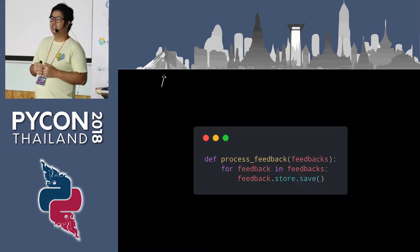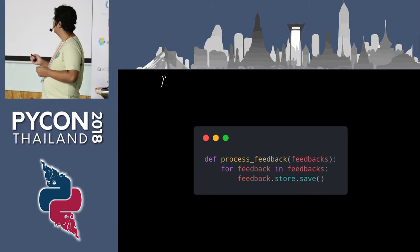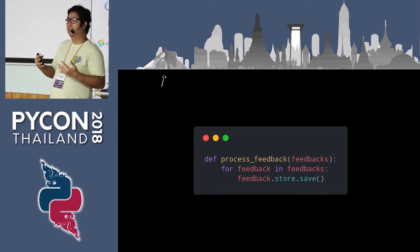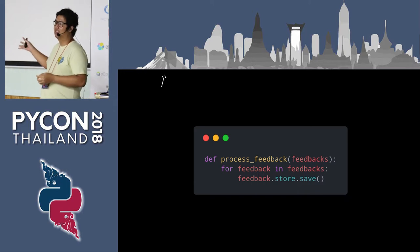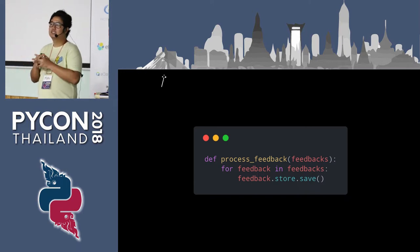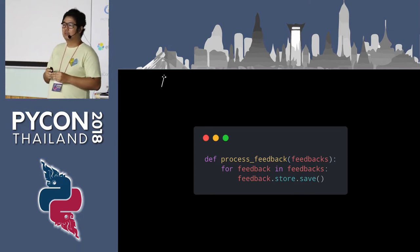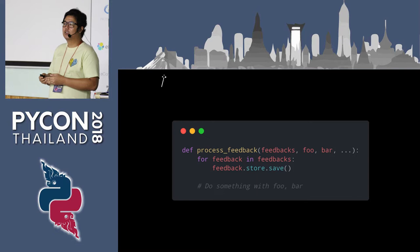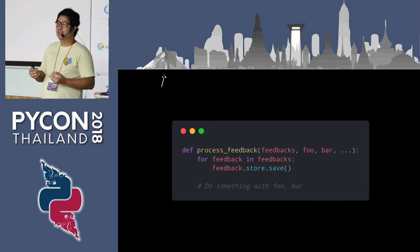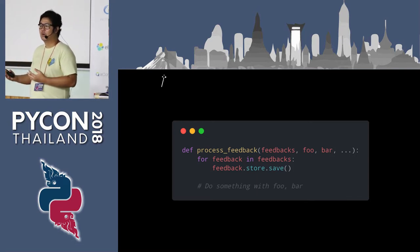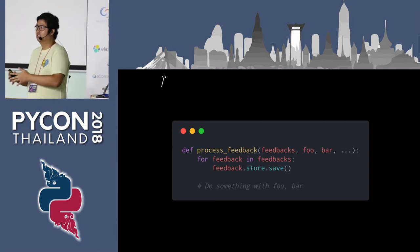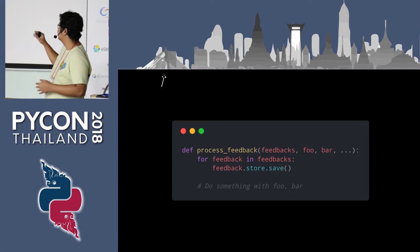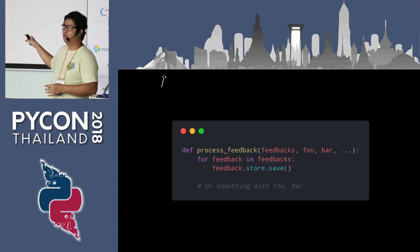Let's look at some example code — the process_feedback function. It's quite obvious: we have a feedback list, we loop through it, restore and save. This looks obvious for a short function. But as time goes by and more requirements come in, the project changes. The codebase changes, we have more arguments to send to the function, more work to do in the same function, and the signature changes.